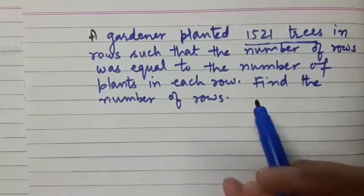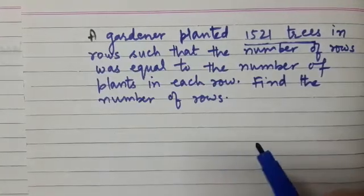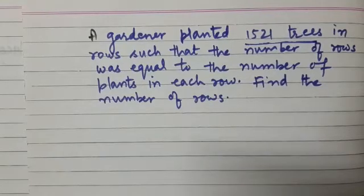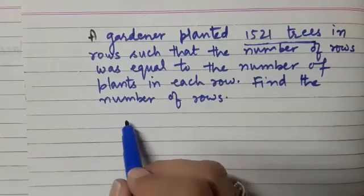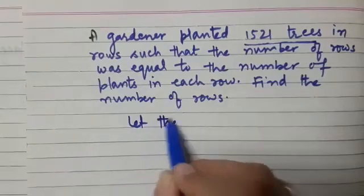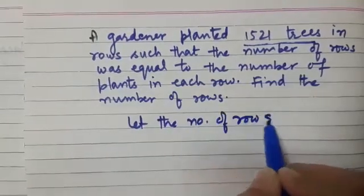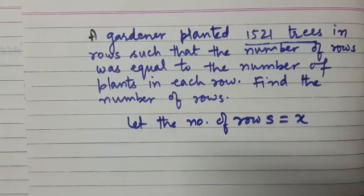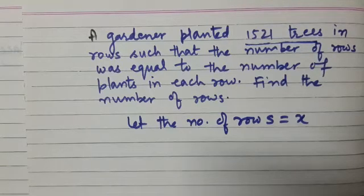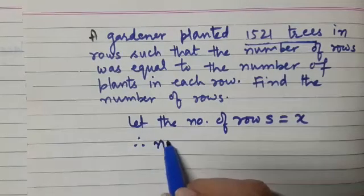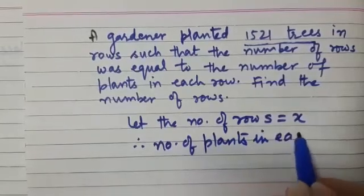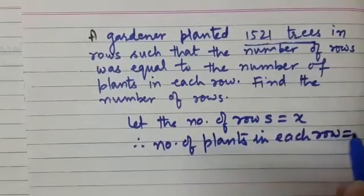This is such a beautiful situation in which we are going to use the knowledge of squares and square roots. Here, we can imagine that the number of rows is equal to x, and it is given that the number of plants in each row is also equal to the number of rows. Therefore, the number of plants in each row is also x.